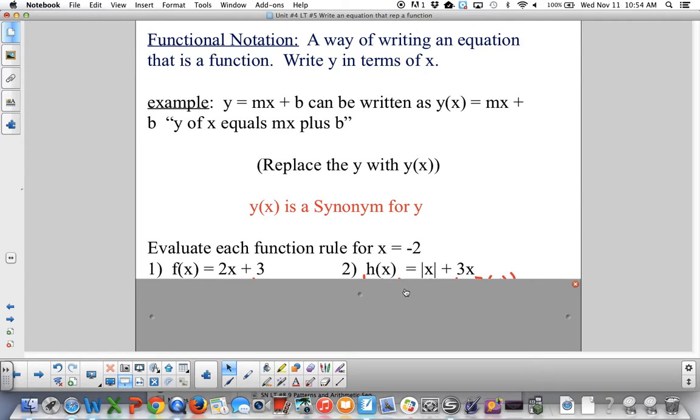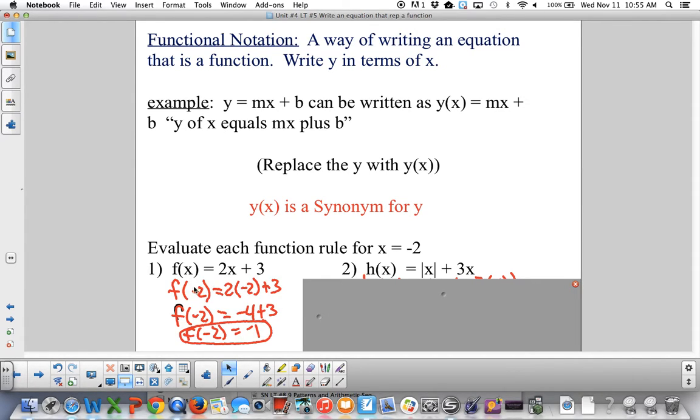Now we're going to evaluate these function rules when x is negative 2. So you can see here, I have f of x, that's how you say it, equals 2x plus 3. Now this f of x is really standing for y. So this you could look at as y equals 2x plus 3. But because it's a function, I am going to write it in functional notation, which is f of x. And I'm going to plug negative 2 in every place where I see an x. So I plug negative 2 in here, and I'm taking f of negative 2. That means I'm finding the function after plugging negative 2 in for my input. So I put negative 2 in for my input, and I get 2 times negative 2, which is negative 4 add 3 is negative 1. And this is how you write it, f of negative 2 is negative 1.